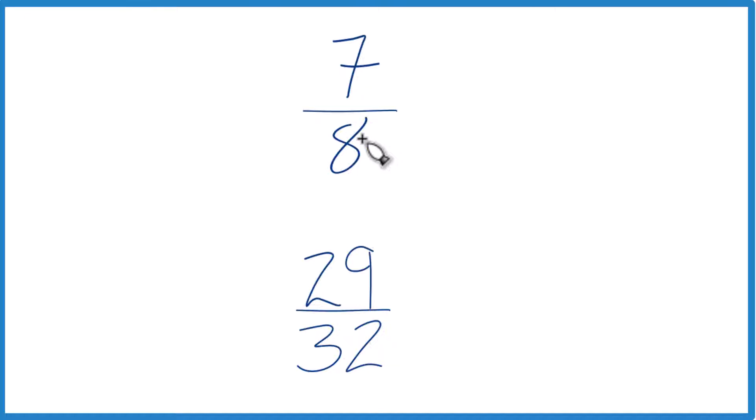You could just use a calculator. Divide 7 by 8, get a decimal. 29 by 32, get a decimal. Just compare the decimals.